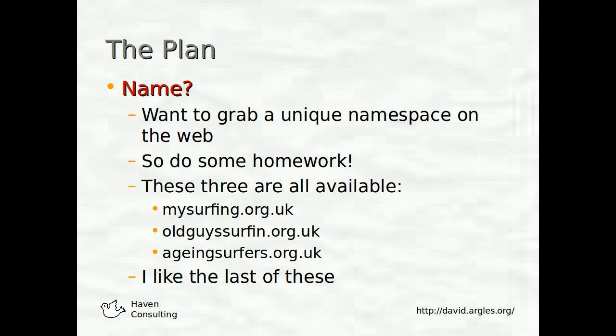The next stage of the plan is to think about a name, because we want to grab a unique namespace on the web so that people know about us. Looking around, three options came to mind, all available as URLs: MySurfing.org.uk — though it doesn't suggest the ageing hippies angle. OldGuysSurfing.org.uk — available, but not sure about that. AgeingSurfers.org.uk — yes, I like that one. So I'm going to go with that.